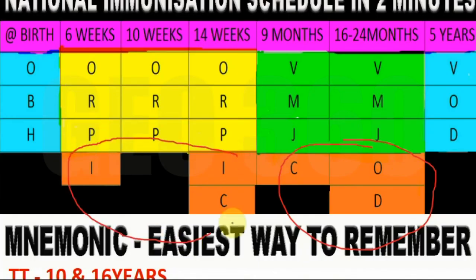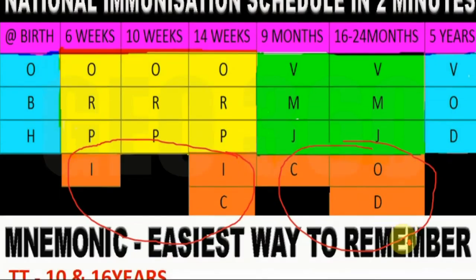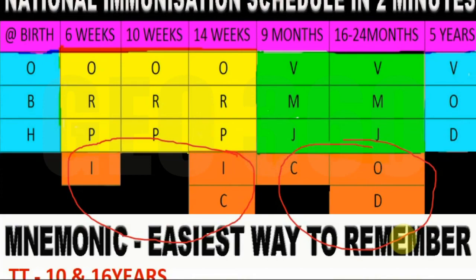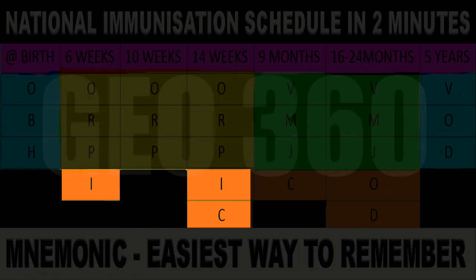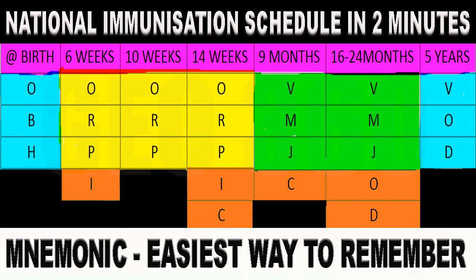One more mnemonic is IIC — immediate intensive care. That mnemonic you have to remember for the IPV section. I stands for inactivated polio vaccine, and C again stands for conjugate pneumococcal vaccine. By this way I guess you can easily remember the national immunization schedule.